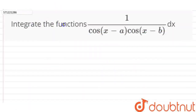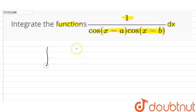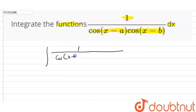So the question is: integrate the function 1 divided by cos(x minus a) into cos(x minus b) dx.